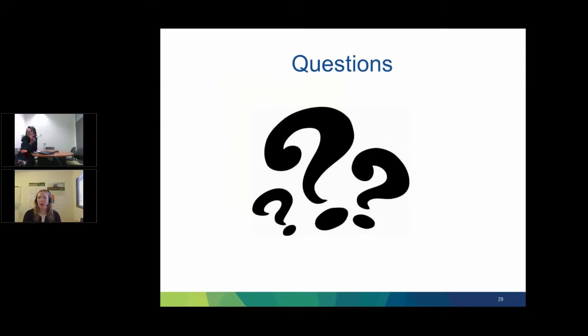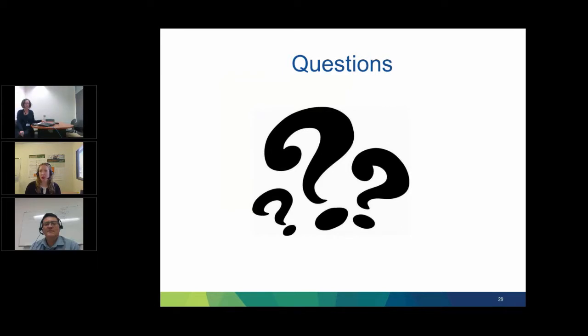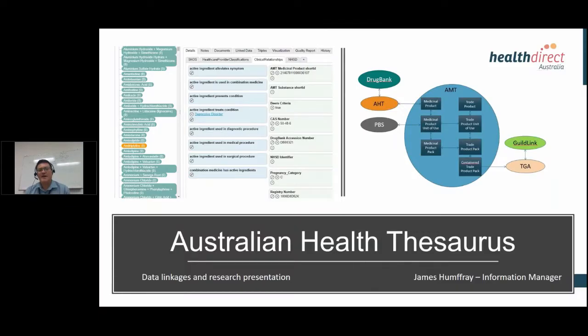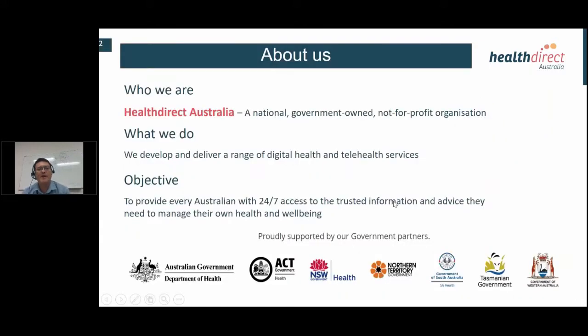Thank you, Tricia. We'll now pass over to James, who is going to present to us about the Australian Health Thesaurus. Thanks Kate. I'm from Health Direct Australia, so I'll start by talking a bit about who we are. We're a government-funded, not-for-profit organisation — actually a co-ag company. We've been going since 2006, and we're owned by the Federal Health Department and the state health departments of every state except Victoria and Queensland. We were set up to develop a range of digital health and telehealth services.